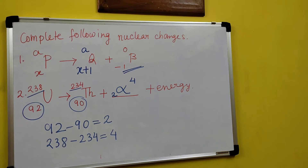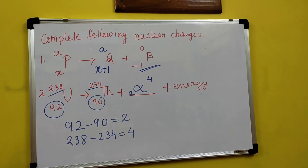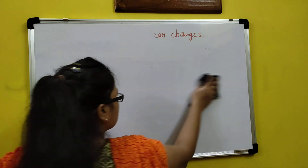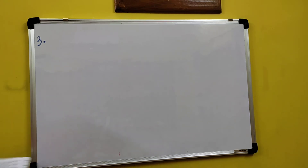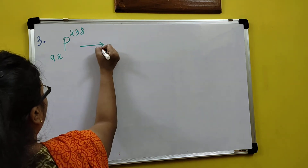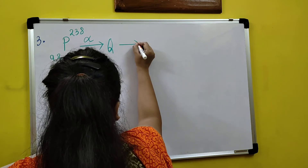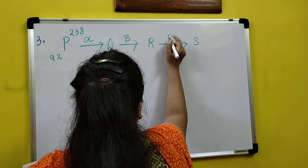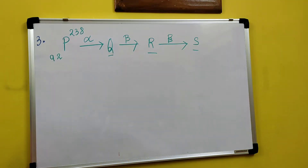These things are very interesting. You only need to remember the chart I showed you — which particle after emission causes what change. Next, number 3: P(238, 92), then one alpha emission giving Q, then a beta emission giving R, then again a beta emission giving S. I need to find Q, R, and S with their atomic number and mass number.